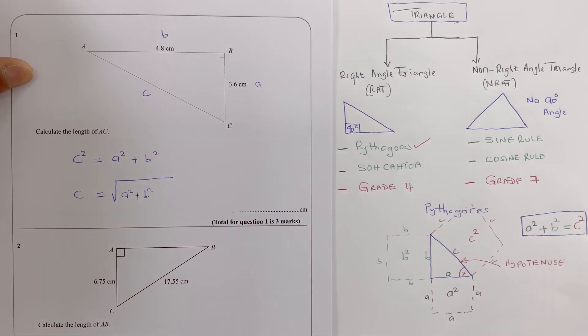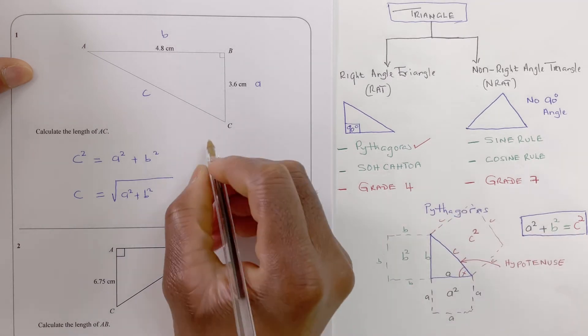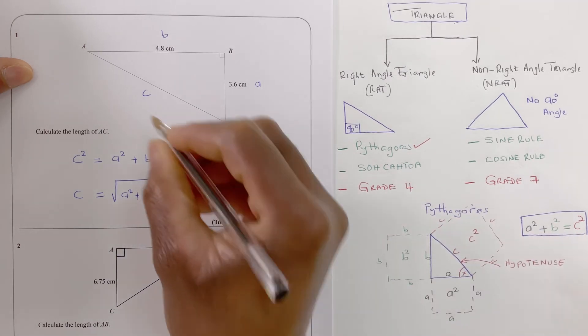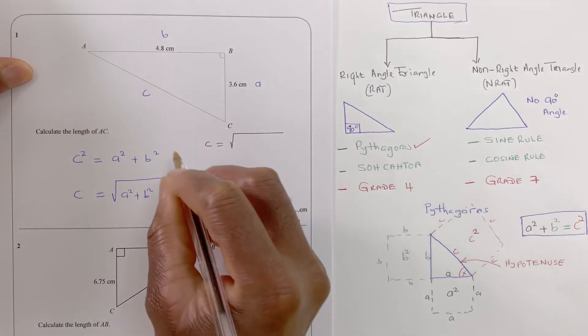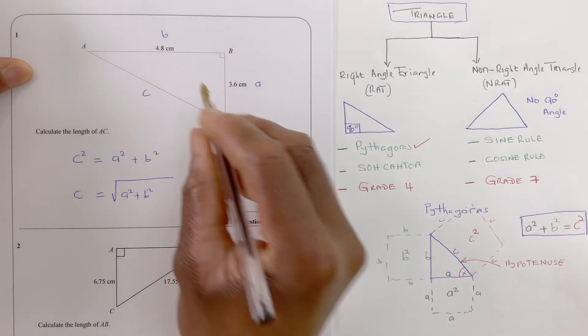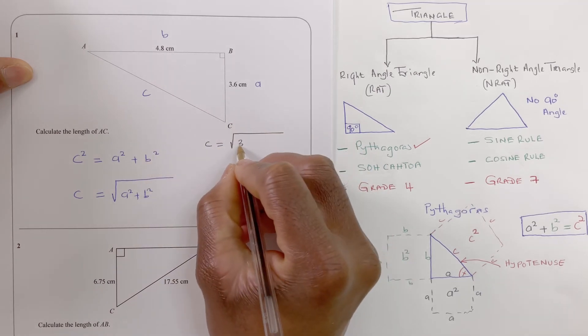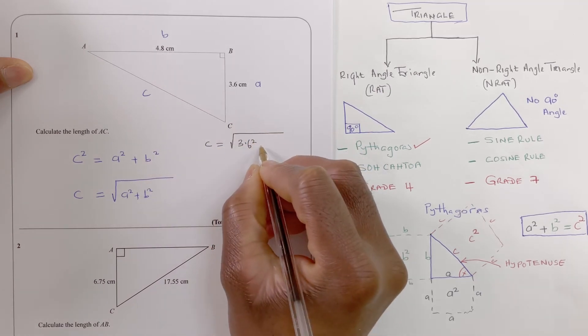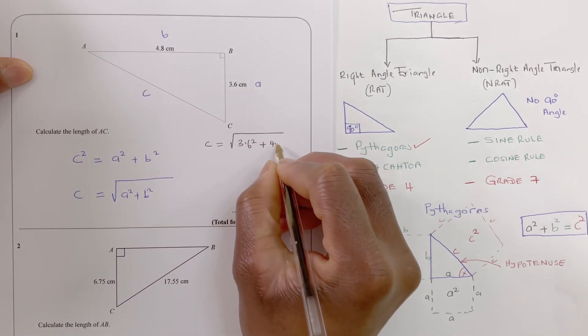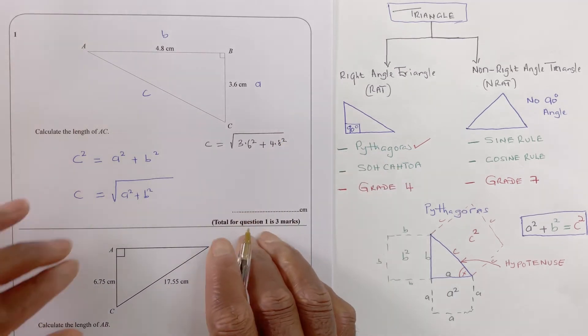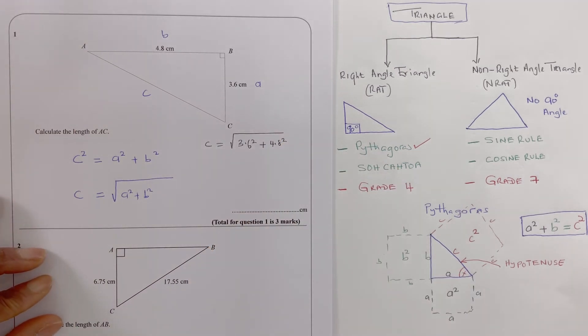To do that now, we can find c by saying square root of a, which is 3.6 squared, plus 4.8 squared. We'll need our calculator for this.